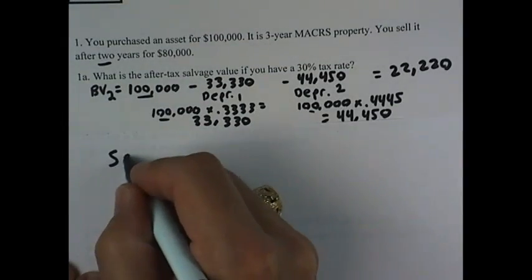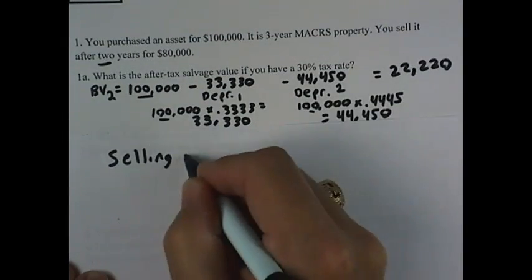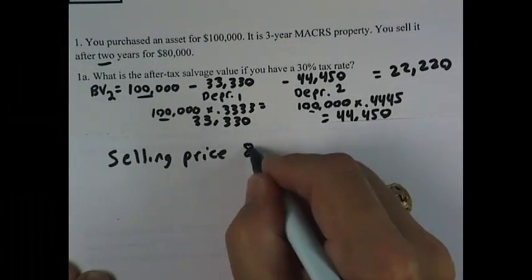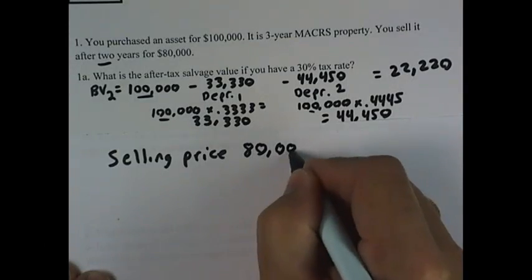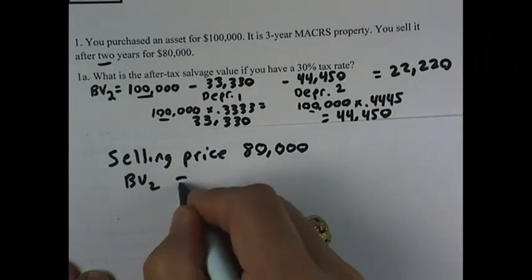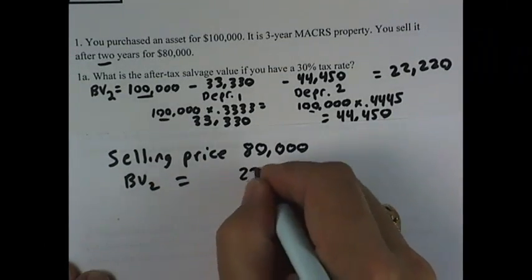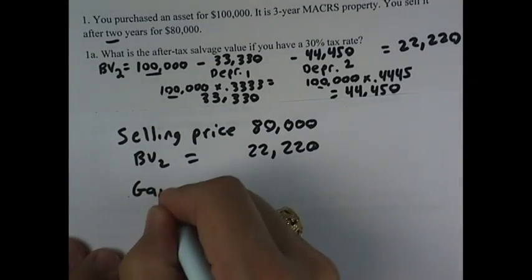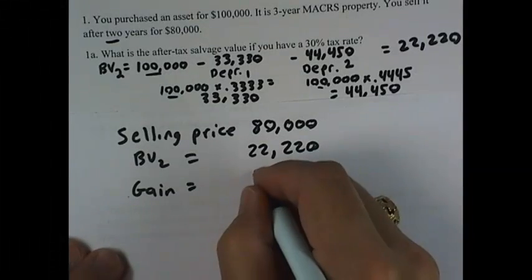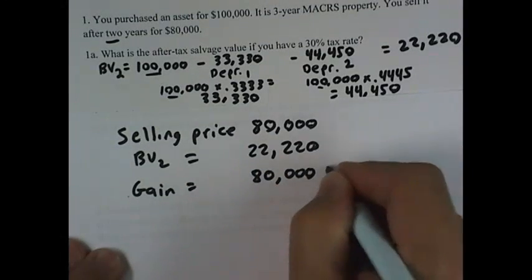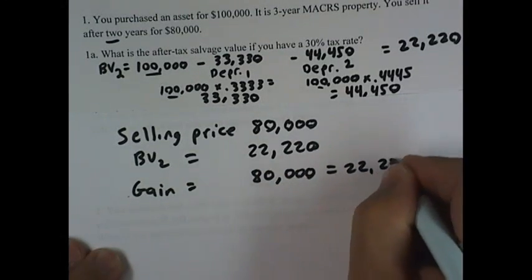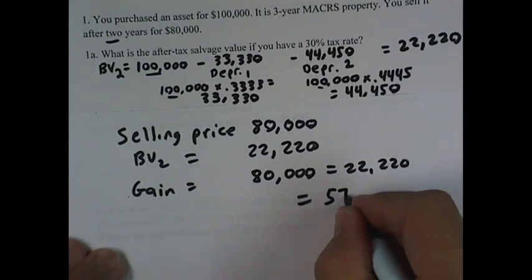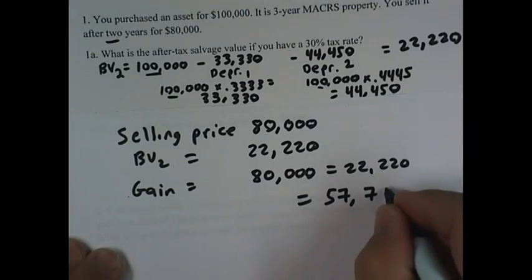We sell the asset at the end of year two for $80,000. At that point, the book value is $22,220, so we're certainly selling it at a gain. Selling price minus the book value is our gain, so our gain then is $57,780.